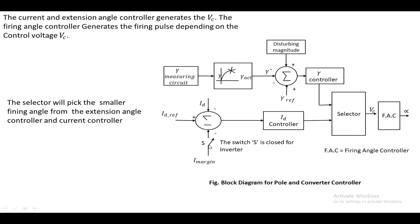A switch is included in the circuit. If we want to generate a firing angle for the inverter, the switch is closed, and the I-margin is added. For the inverter, the I-margin is subtracted from that value, and the result is given to the controller. Based on this value, the gamma angle is generated for the inverter circuit. Thank you very much for watching this video.